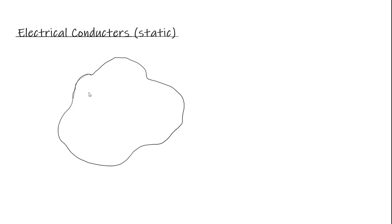Now let's consider electrical potential and equipotential lines. Where is the potential equal on this conductor? The answer is the outside surface — the outside surface is going to be an equipotential.